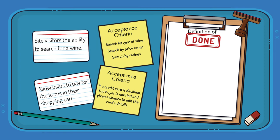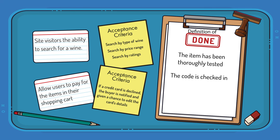On a definition of done, we'll see things like the item has been thoroughly tested, the code is checked in, the website works in Chrome, Safari, Firefox, Edge, and Opera, and other items like that. You could write these as acceptance criteria for every product backlog item, but it would be a lot of work adding these to every backlog item. So instead, we elevate common items into a universal definition of done.